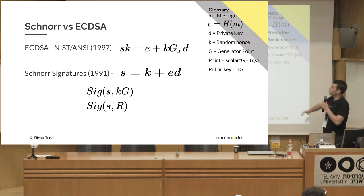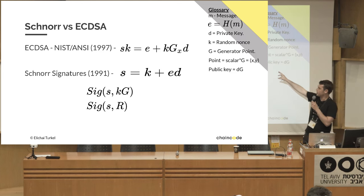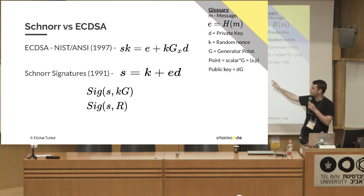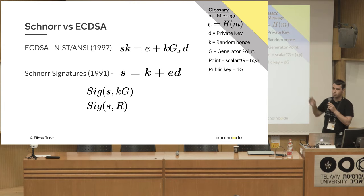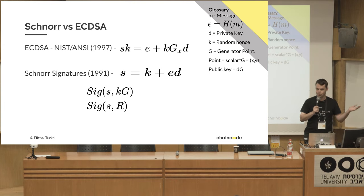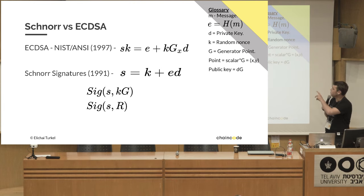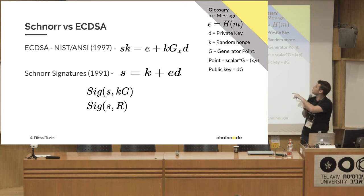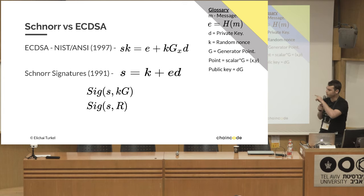We have ECDSA and Schnorr. ECDSA is what we currently use in Bitcoin. I played a bit with the equations so they'll look pretty similar.